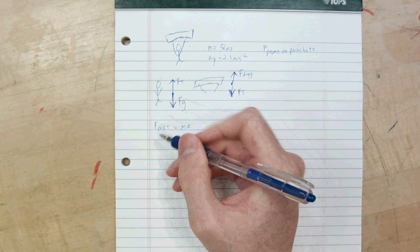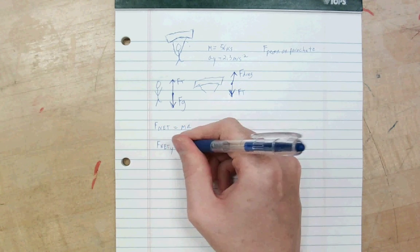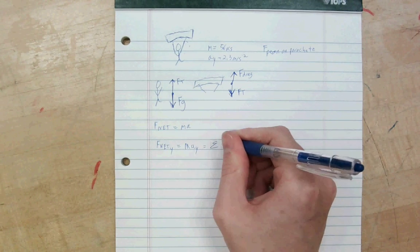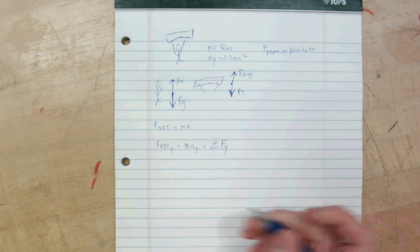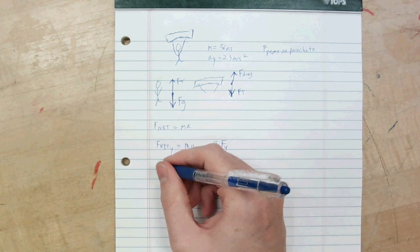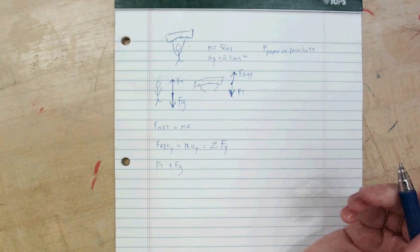Well, we're only dealing with y here. So, that's F net in y equals the person's mass times the acceleration in y. And F net is just the sum of the forces in y, which we can write out. In y, on the person, there is a tension force and there is a gravitational force.